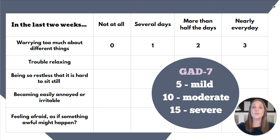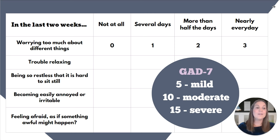The total score cutoff for mild anxiety is greater than five, for moderate anxiety a score greater than ten, and fifteen or more for severe anxiety.